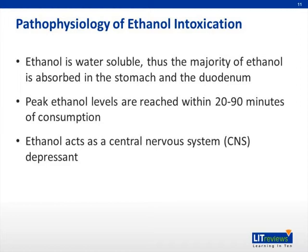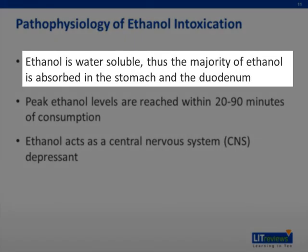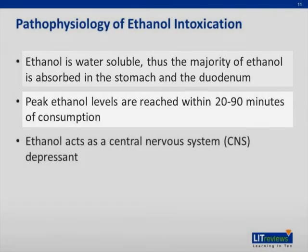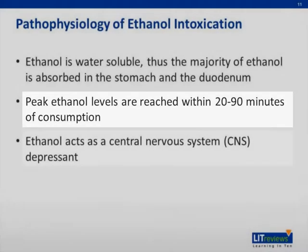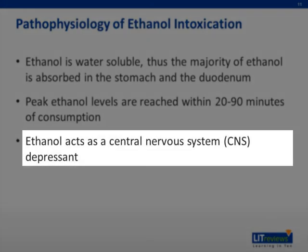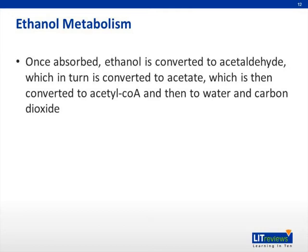The pathophysiology of ethanol intoxication: ethanol is consumed and is water soluble. The majority is absorbed in the stomach as well as the duodenum. People reach peak levels between 20 to 90 minutes after consumption. Its primary effects are on the CNS, where it acts as a depressant. Once absorbed, ethanol is converted to acetaldehyde, which is then converted to acetate, subsequently converted to acetyl-CoA, and then lastly to water and carbon dioxide.